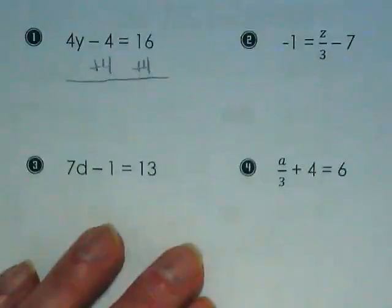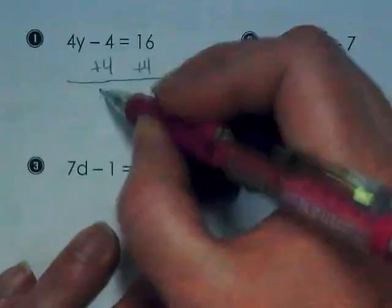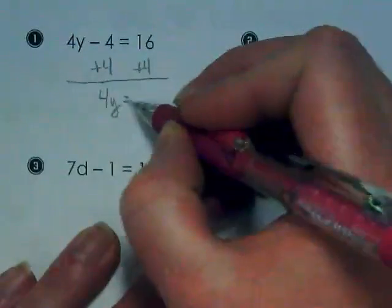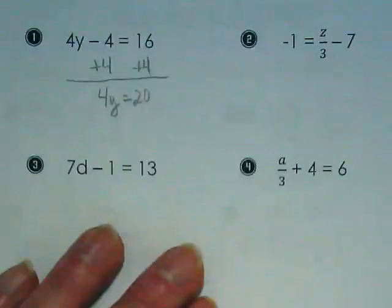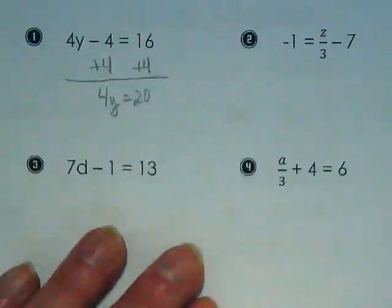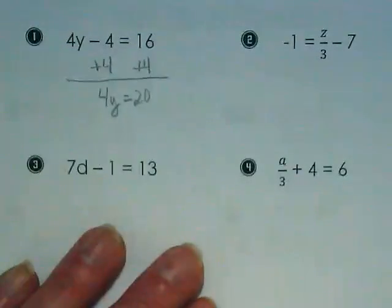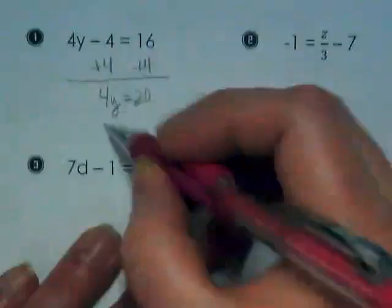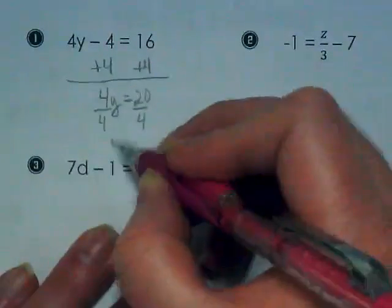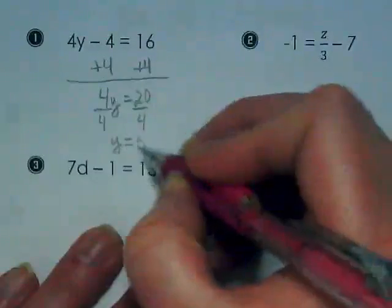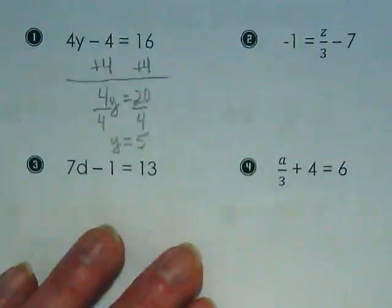Again, every time I want to see you putting it on both sides of the equation, we get 4y is equal to 20. That was step one. Step two is to divide by what? The 4. Our goal is to leave that y with an invisible one in front of it, which we have done. 20 divided by 4 is 5.